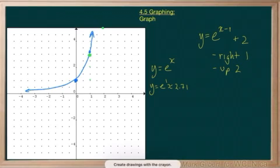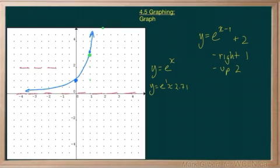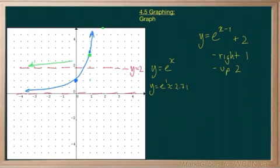The asymptote, which is at y equals 0, will also move up 2 units, so it will be here at y equals 2. We can now get a fairly decent graph of y equals e to the x minus 1 plus 2.